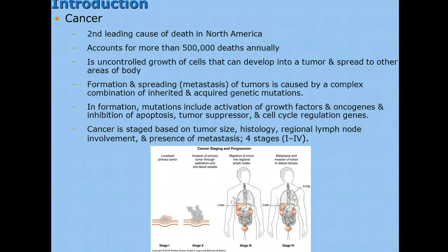These types of mutations include the activation of growth factors in oncogenes, an inhibition of apoptosis, which is the natural death of a cell, tumor suppressors, and cell cycle regulation genes. When something goes wrong with one of those items, it can cause normal cells to proliferate out of control and cause what's called a tumor, or a leukemia if it includes a white cell.